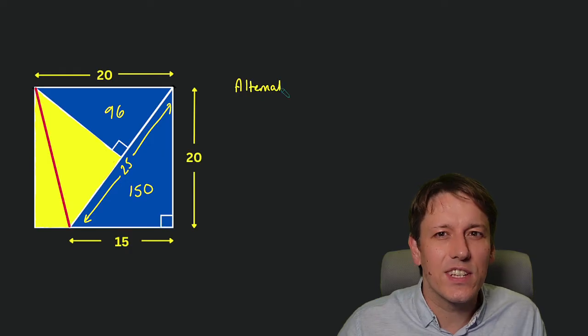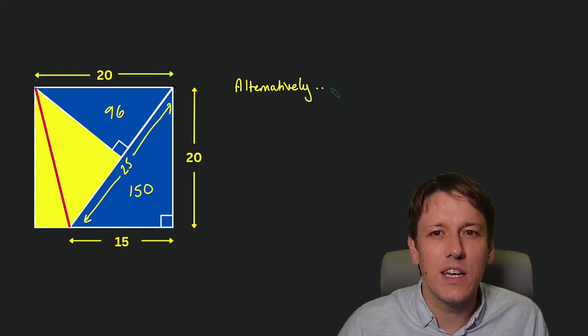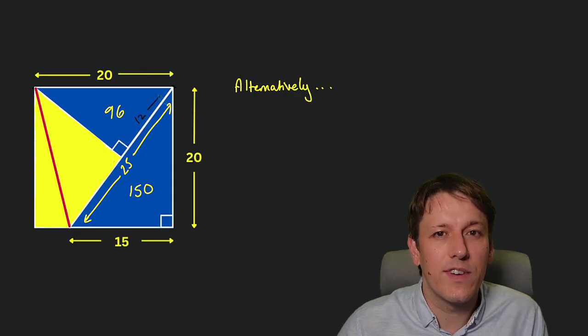And actually the student I was doing this with today suggested a different way of doing it, which I also thought was quite nice, which is to say, well, we know the hypotenuse of the original triangle was 25, and we know the base of the smaller blue triangle is 12, so we do also know that this length in the yellow area is 13.